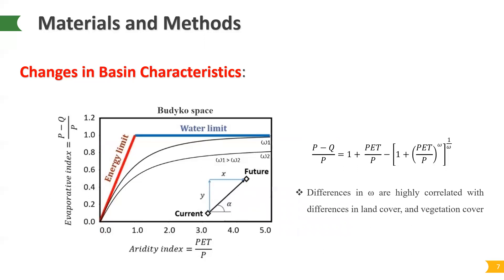To estimate changes in basin characteristics, we also use the Fuh equation, which describes the relationships of aridity and evaporative indices in the Budyko framework. In the Fuh equation, omega is a free parameter that has no direct physical meaning. Omega can represent an integrated property of the basin, ranging between 1.5 to 4.6 with a median value of 1.8. Previous studies reported that differences in omega are highly correlated with differences in land cover and vegetation cover. Therefore, shifts in omega of national forests and grasslands from current to future conditions were used to represent changes in integrative properties in response to climate change.